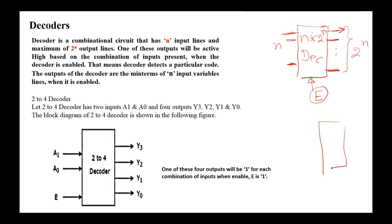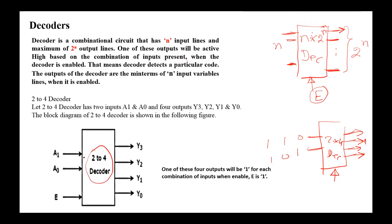For example, consider a 2-to-4 decoder. If enable is one and the input is 00, then output Y0 will be one. If the input is 01, Y1 will be one and all other outputs are zeros. If the input is 10, Y2 will be one and all other outputs are zeros. Here is the block diagram of the 2-to-4 decoder: we have two inputs A1 and A0, an enable input, and four outputs Y0 to Y3.